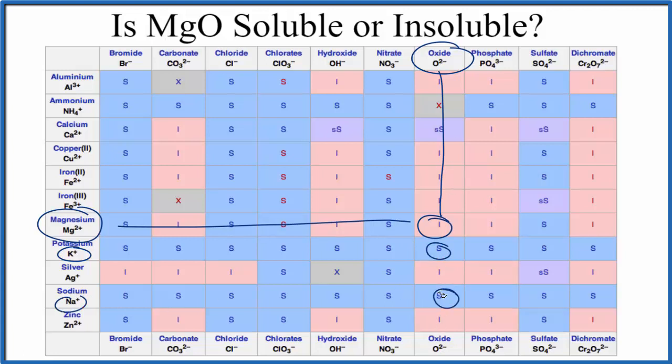But the other metal oxides are either slightly soluble, like calcium, or insoluble. So in answer to our question, MgO, magnesium oxide, is insoluble in water.